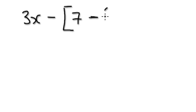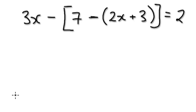Let's say 3x minus bracket 7 minus, sorry, minus, let me think, 2x. Plus, plus, plus 3. And then close it, close it again, equals 2. So press pause and have a go.